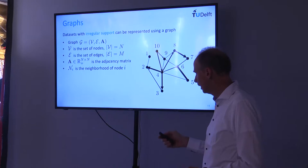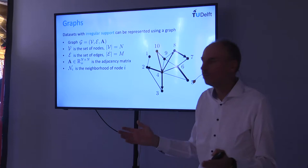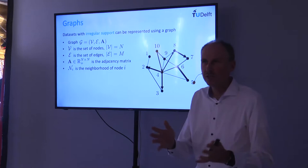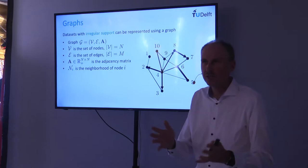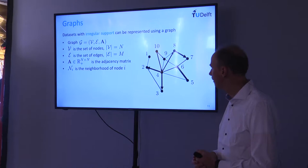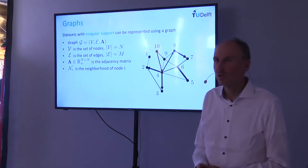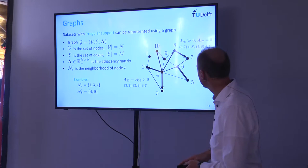We have data sets with irregular support represented by a graph G, where V is the set of nodes and E the set of edges. N is the number of nodes, M the number of edges. The adjacency matrix represents the edges; we can have directed or undirected edges with positive weights indicated by line thickness. For directed graphs, neighborhoods N_i consist of nodes pointing toward node i.